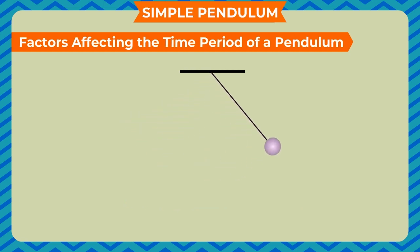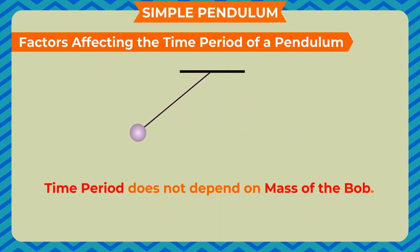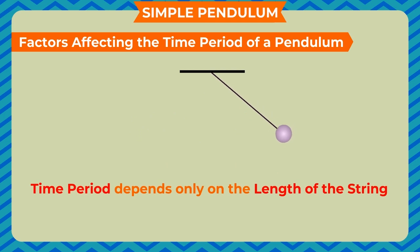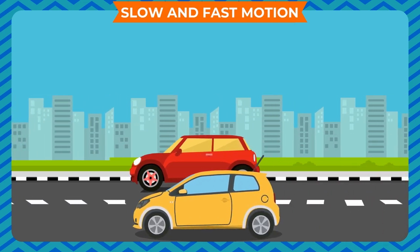Factors affecting the time period of a pendulum: Time period does not depend on amplitude. Time period does not depend on mass of the bob. Time period depends only on the length of the string.